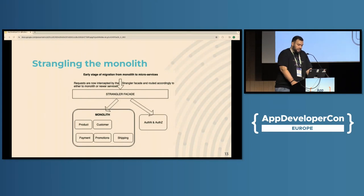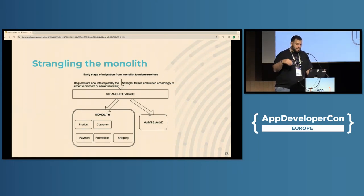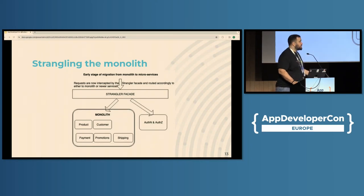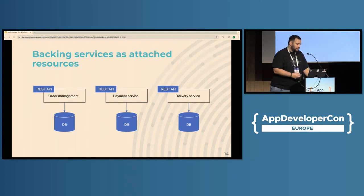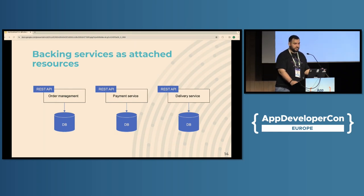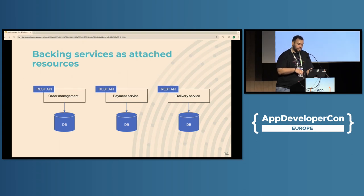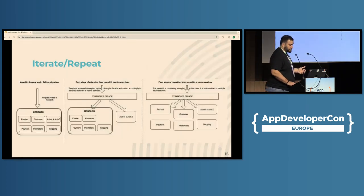This technique is called strangling the monolith. Essentially, you build a strangling facade — an API gateway — that makes this transition invisible to the outside world. After a module has been carved out of the monolith and is deployed as a new service, we also have to think about what we call the backing services. According to the 12-factor app methodology, a backing service is one that the app consumes over the network as part of its normal operation — it can include data stores, queuing systems, SMTPs, caching systems, anything like that. The final step each time is to give the new service its own backing services and full ownership of them, so a service has full ownership over its database. We repeat the process for each of the bounded contexts until the monolith has completely disappeared.